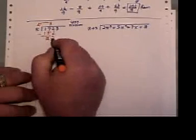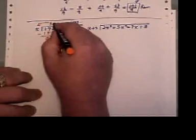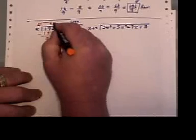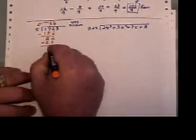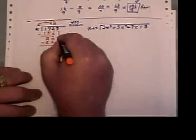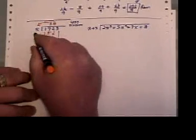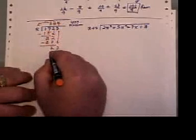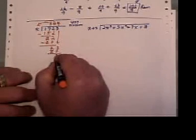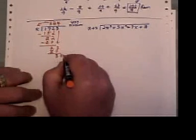5 doesn't go into 2. 5 into 22 is 4, so you put the 4 over the 2. You do 4 times 5 is 20, and you subtract, and then you bring down the next number. Then you do 5 into 23 is 4. 4 times 5 is 20, and out would pop the remainder.